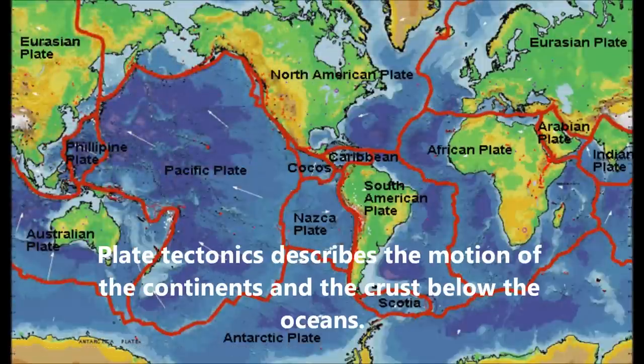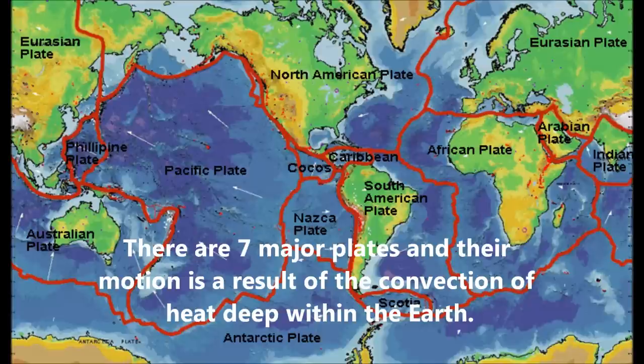Plate tectonics describes the motion of the continents and the crust below the oceans. There are seven major plates and their motion is a result of the convection of heat deep within the earth.